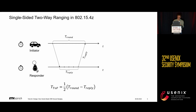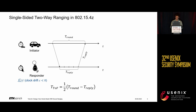In practice, no two device clocks go at exactly the same speed. Without loss of generality, we can assume the responder's clock is slightly too slow. We call this difference between the speed of an ideal nominal clock and a real clock the clock drift or clock frequency offset — a quantity that is negative for slower clocks and positive for faster clocks.